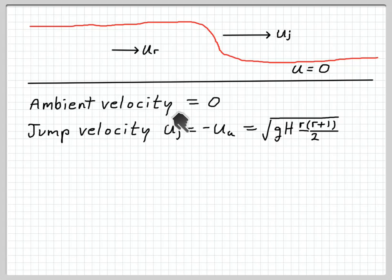The jump velocity, Uj, is just 0 minus U sub u, or square root GH r times r plus 1 over 2. That's the speed that a hydraulic jump will move into stationary flow.